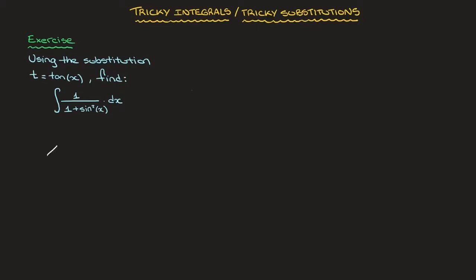Consider a right-angle triangle like the one I'm drawing now. We have a right angle here, and we'll call this interior angle x. If I call the side length opposite to x as t, and the side adjacent to x as 1, then we can see clearly that tan of x equals t over 1, which is just t — matching our substitution t equals tan of x.